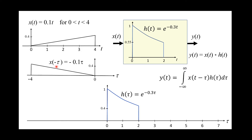Why do we need to do that? Because as I am sliding this input to enter the system, the system will see first this part of the input — what happened in the first hour of the input, then the second hour and third hour. So we have to flip it so that as the input enters, the system will see the first hour, second, and third.